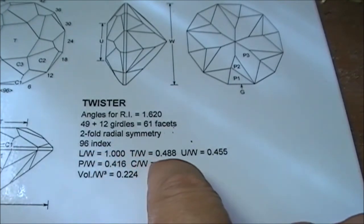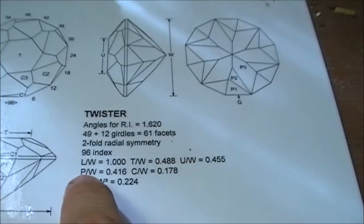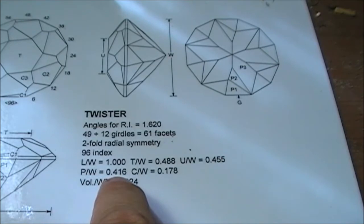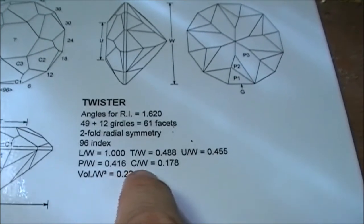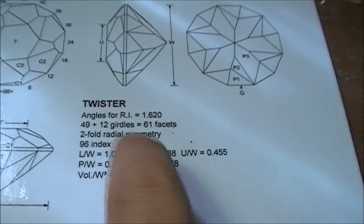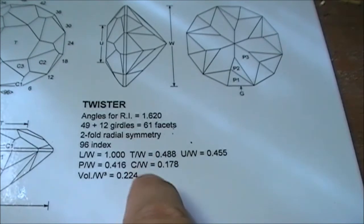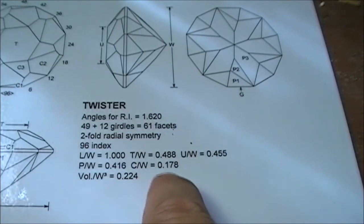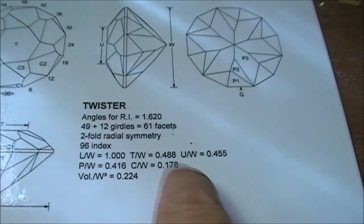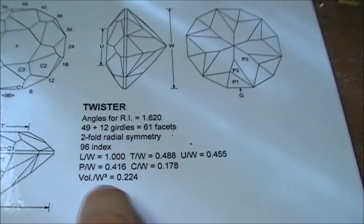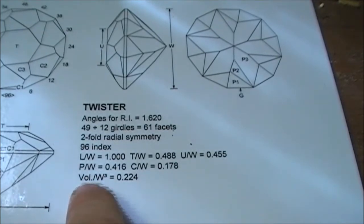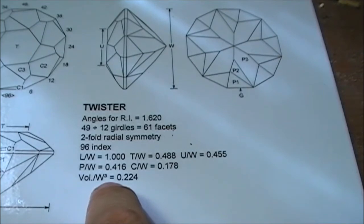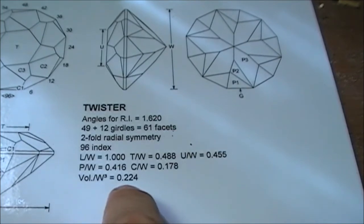Table on the width is 0.448. P on W, this is pavilion depth on the width, is 0.416. Crown size, the depth of the crown on the width of the stone, is 0.176. And this is the important one I wanted to show you today: the volume on the width cubed is 0.224.